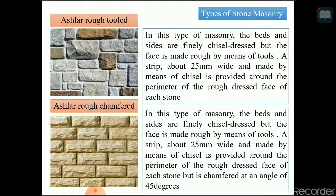Then there is ashlar chamfered masonry. In this type, the beds and sides are finely chisel dressed but the face is made rough by means of a tool. A strip about 25 mm wide made by chisel is provided around the perimeter of the rough dressed face of each stone, and this strip is chamfered at an angle of 45 degrees. The difference from ashlar rough tooled is that ashlar chamfered has the 45-degree chamfer.